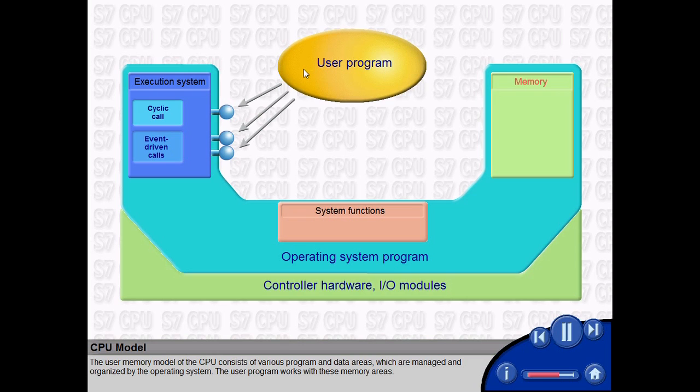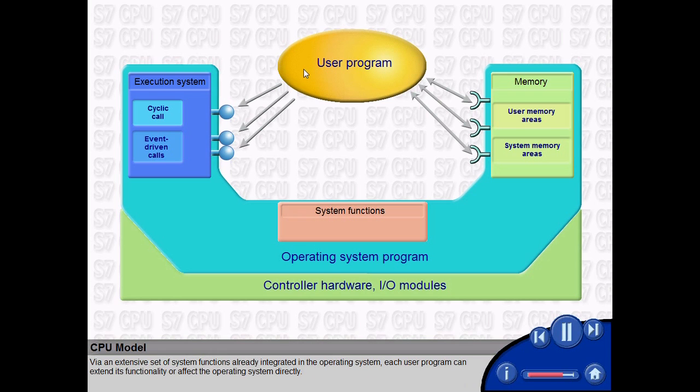The user memory model of the CPU consists of various program and data areas, which are managed and organized by the operating system. The user program works with these memories.